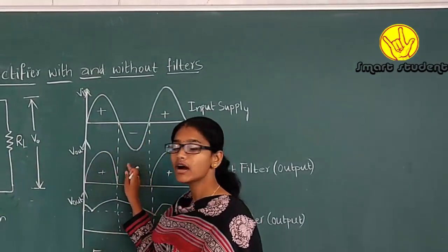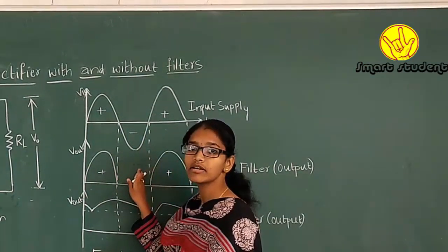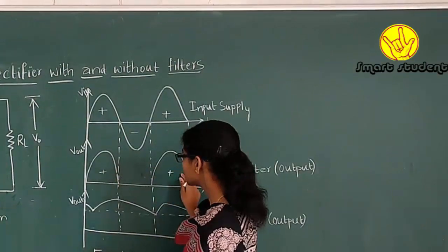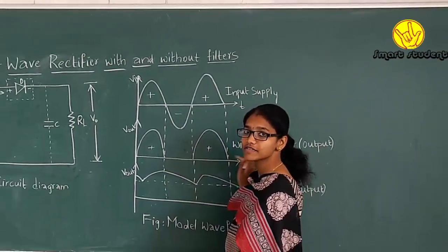So we don't observe any output signal or any output voltage in the waveforms. Now it is the same for the next positive half cycle and the negative half cycle is blank.